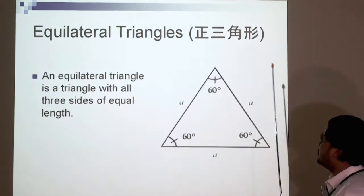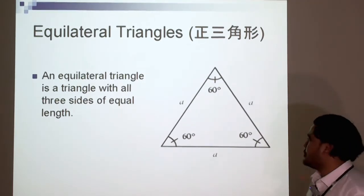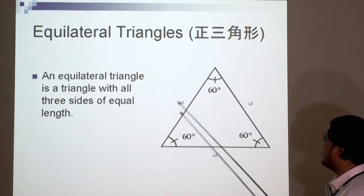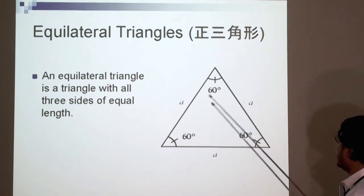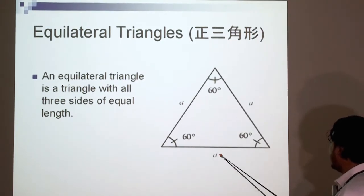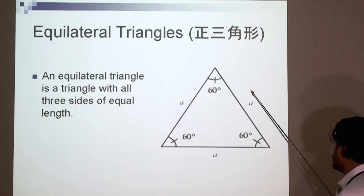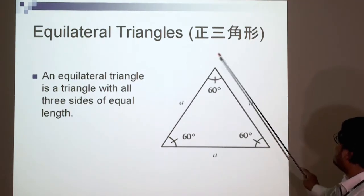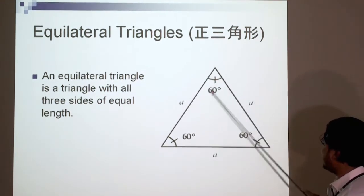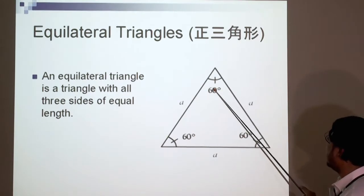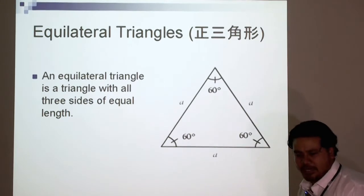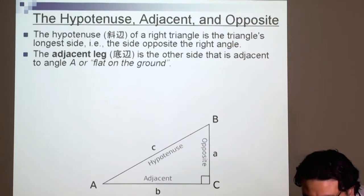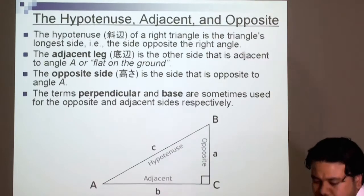What is an equilateral triangle? An equilateral triangle is a triangle with all three sides of equal length. So A here, A here, A here. If that's 30 centimeters, that's 30 centimeters, that's 30 centimeters. All equal. And if all the sides are equal, then all the angles are equal. 60 degrees, 60 degrees, 60 degrees. Remember that, equilateral.